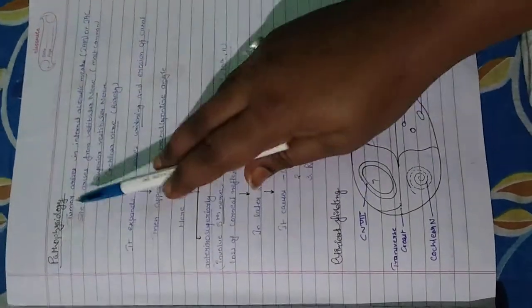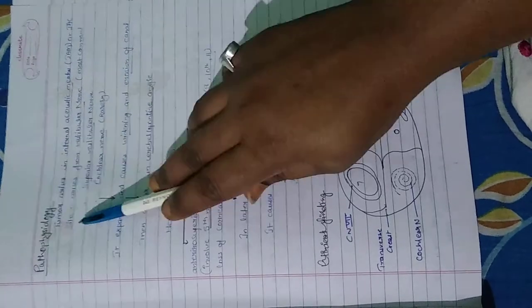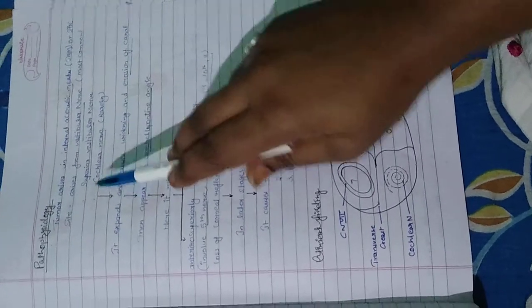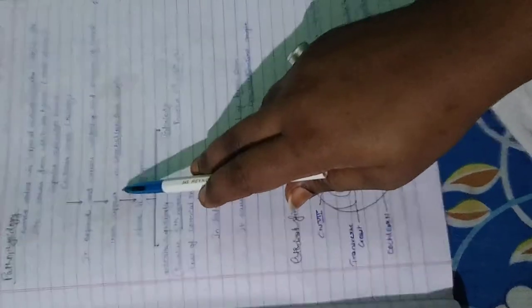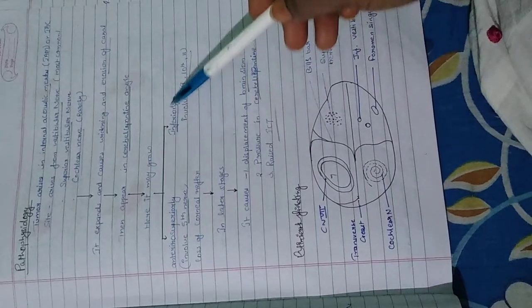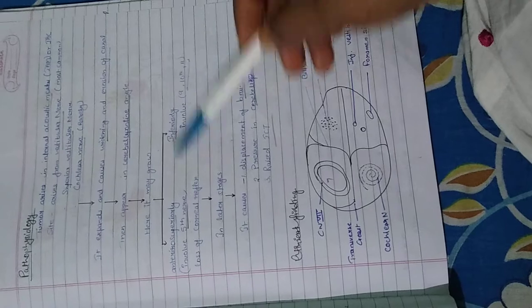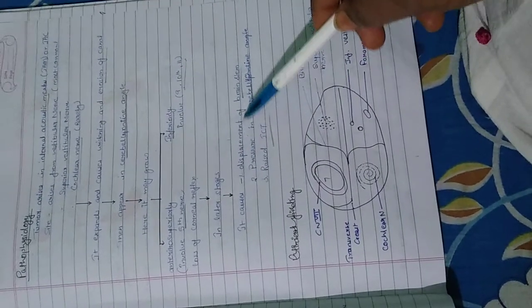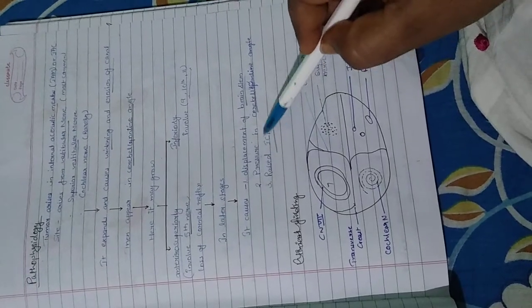Pathophysiology: Tumor arises in the internal acoustic meatus, most commonly from the inferior vestibular nerve. If the 5th nerve is involved, there is loss of corneal reflexes. In later stages, it causes displacement of brainstem and pressure on the cerebellum, which will cause increased intracranial tension.